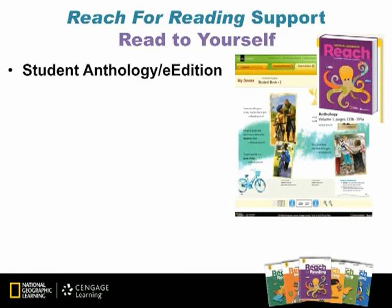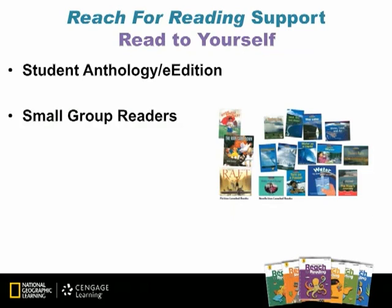The first task is Read to Self. For this area, students are taught three ways to read to self: one, to read and talk about the pictures; two, to read the words themselves; three, reread and retell a previously read book. Teachers set up choices for students within each of these categories. Resources from Reach for Reading that teachers could consider are the Student Anthology and E-Book, and the Small Group Readers — there are 100 fiction and non-fiction selections at each grade level.